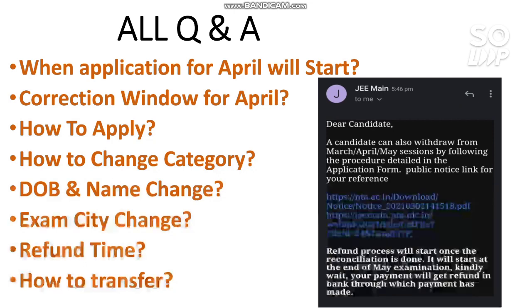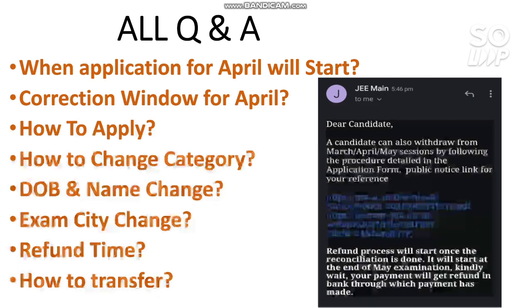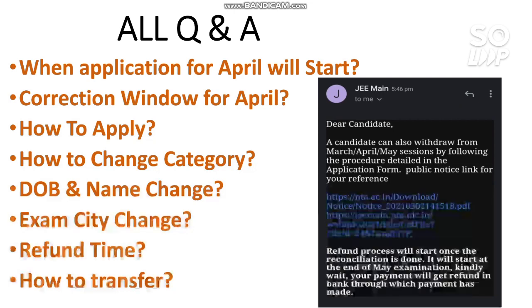The last question is about transferring between attempts. If you want to transfer from March to April or May, or from April to May: if you have unticked the March attempt and ticked the April attempt, your attempt will be automatically transferred to April. Similarly for May. If you now want to transfer from April to May, you just need to untick the April attempt and tick the May attempt — you don't need to pay any additional money and you will be able to appear for the exam.